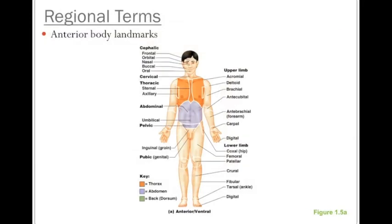Next, we're going to move into regional terms. Welcome to your first diagram of the course, which you can locate on Angel as well as a posting on Edmodo. You're going to need to learn all of these terms. These are regional terms — so if you're speaking to another healthcare professional about a patient's sternal area, both of you know you're talking about the breastbone. Take the time to get these down.